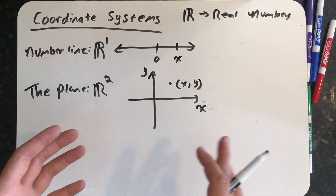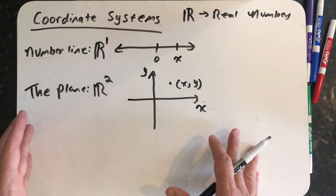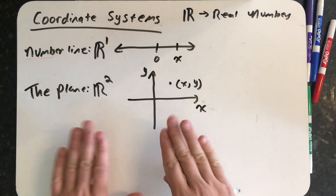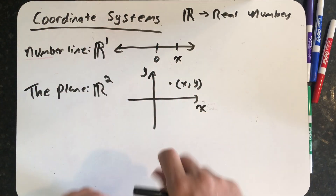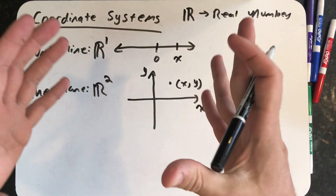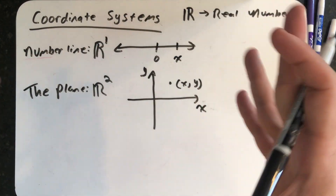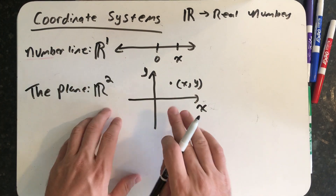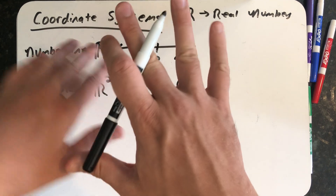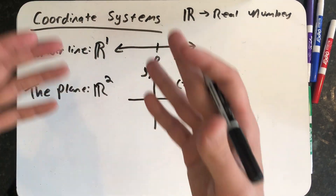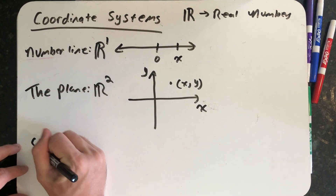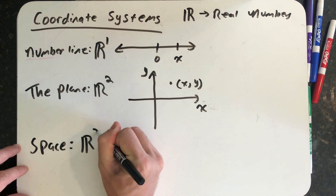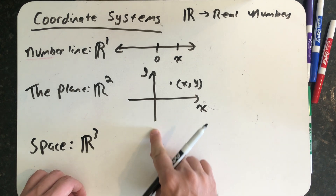If I want to consider an object in space — which is nice because we actually exist in space — between the board and the camera there's all this information, all these points. The coordinate system that would describe what I'm actually filming here would be space. I'm not just writing on the board; that would be R2. I have all the space in between where I can move my hands, and so that's really what we would call space. We need three pieces of information: an x, a y, and a z.